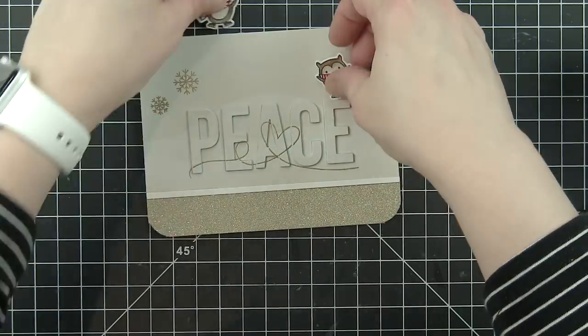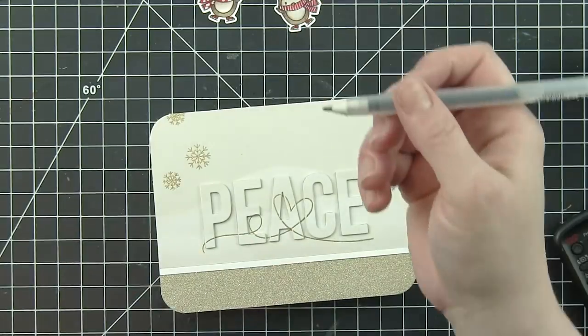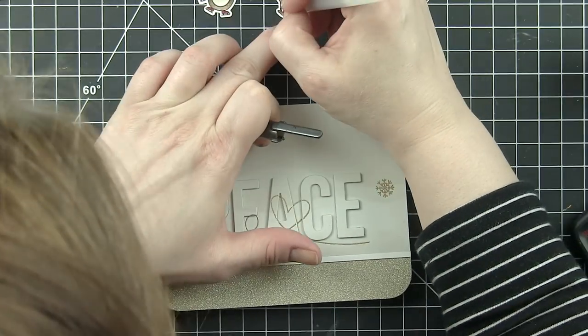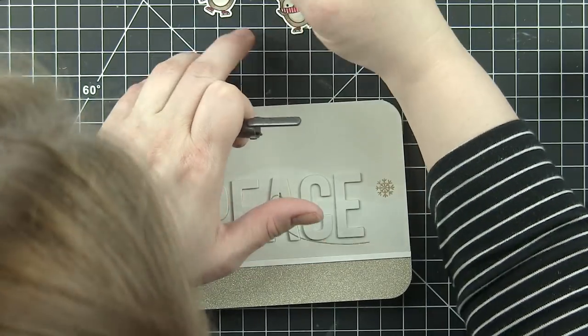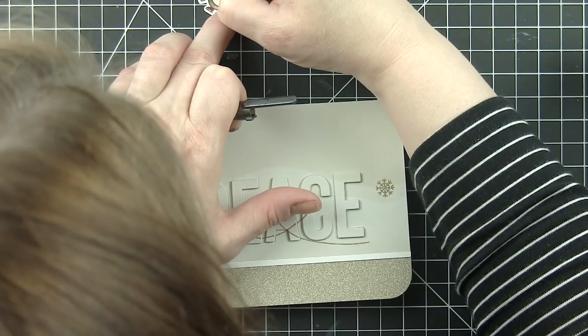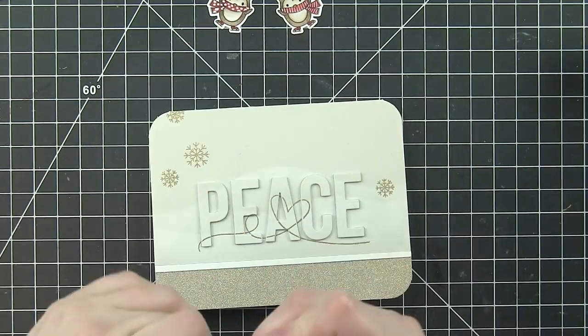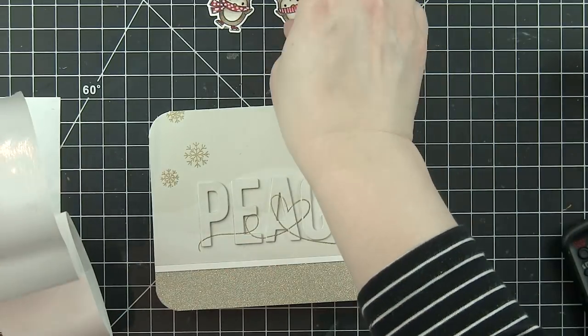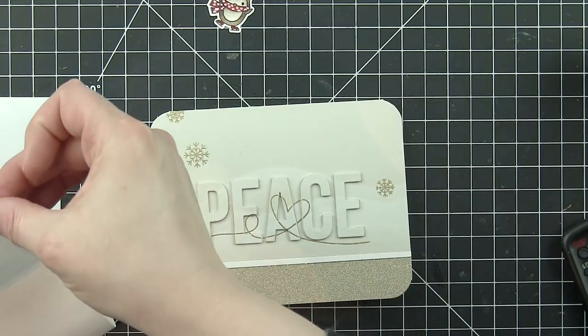Now the owl that's next to the letter P, because the letter P is spotlighted and popped up, we're going to need to adhere the owl with a little foam adhesive so that it is on the same layer as the greeting. To do this, I did add a little black glaze pen to the eyes on both owls.